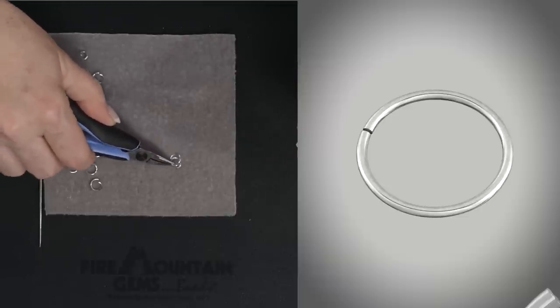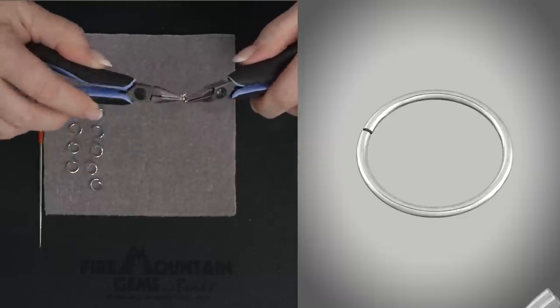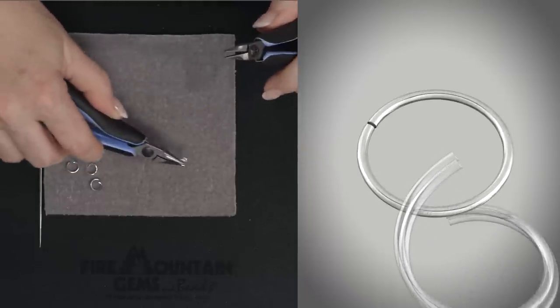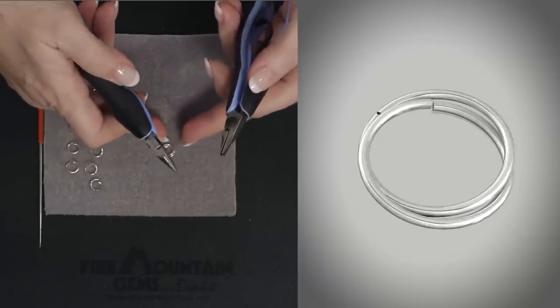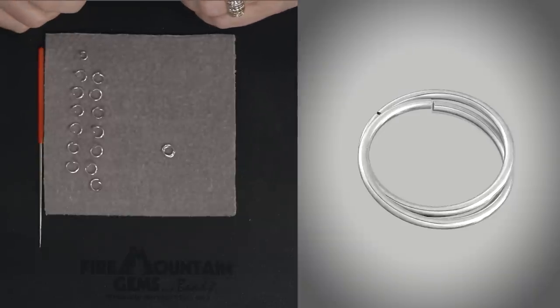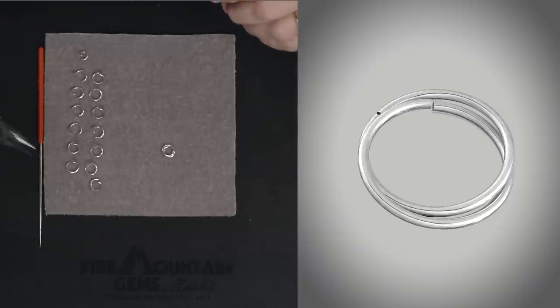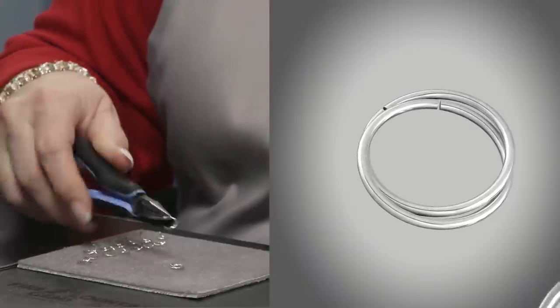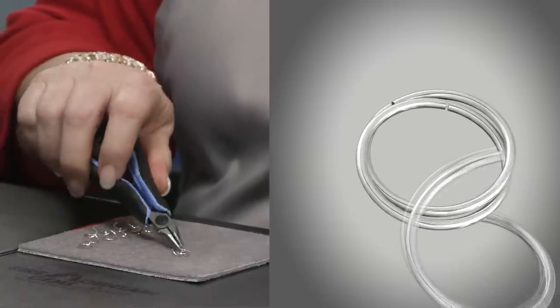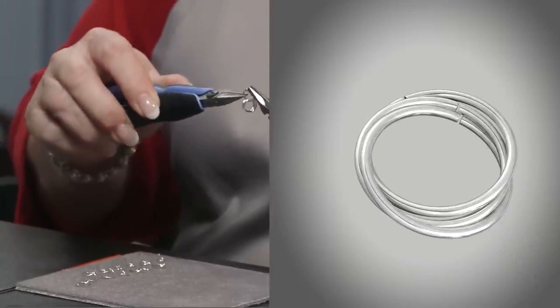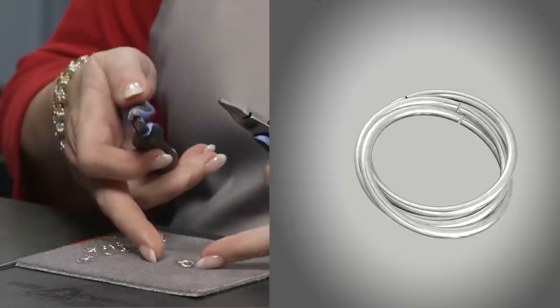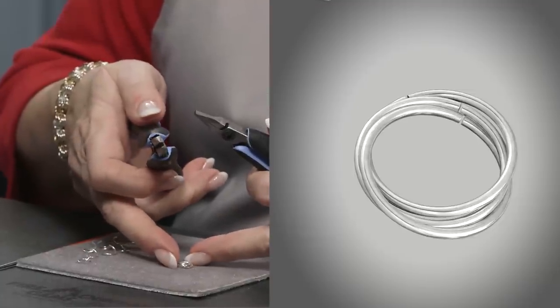So you pick up an open ring, run it through the large jump ring, then lay it on your mat and nest it so it goes nicely together like that. Then I'd like you to take another open one and run it through the two, close it, lay it down and nest it. And again, nest them nicely together.